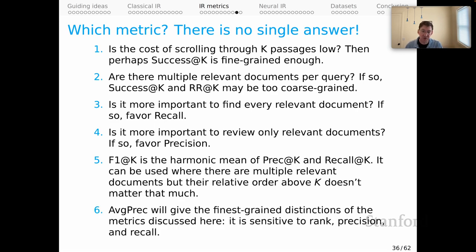Average precision, of all the metrics I showed you, will give the finest grain distinctions of all the metrics that we discussed. It's sensitive to rank and precision and recall, and so if you don't have very much information and you would like to make fine-grained distinctions among different rankings you've predicted, average precision may be a very good choice.